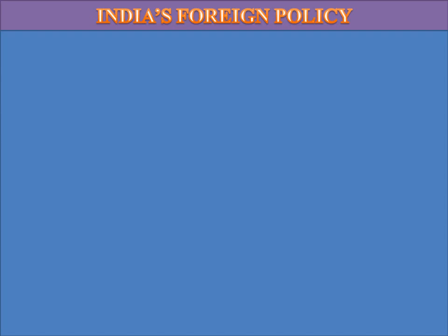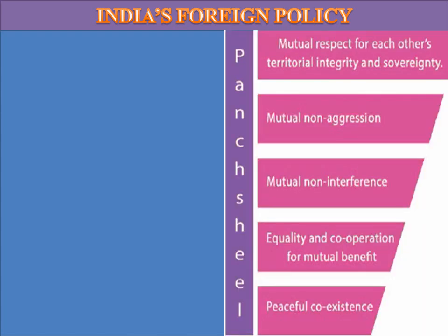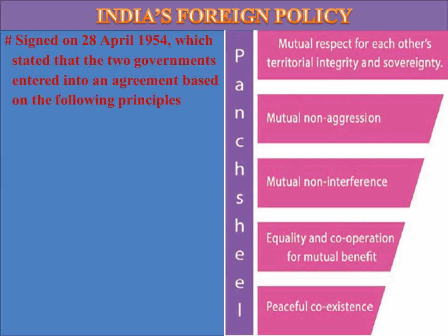The two governments entered into an agreement based on the following principles, which are shown on the right side of the slide: mutual respect for each other's territorial integrity and sovereignty; mutual non-aggression; mutual non-interference; equality and cooperation for mutual benefit; and peaceful coexistence. These principles were incorporated in the Bandung Declaration signed at the Afro-Asian Conference held in 1955 in Indonesia.